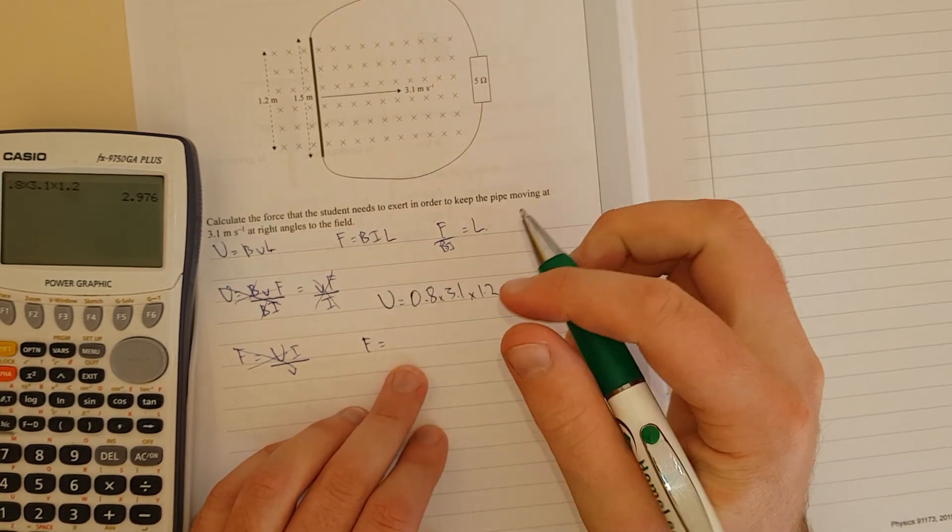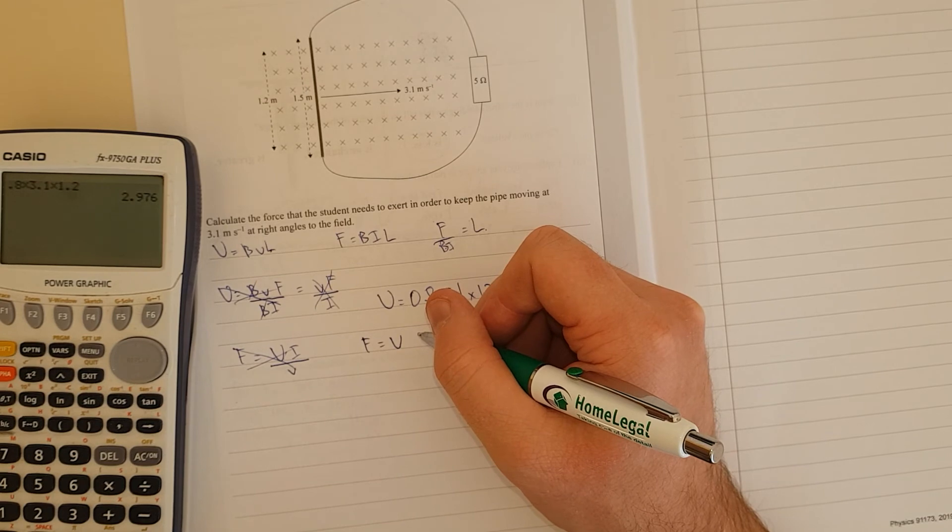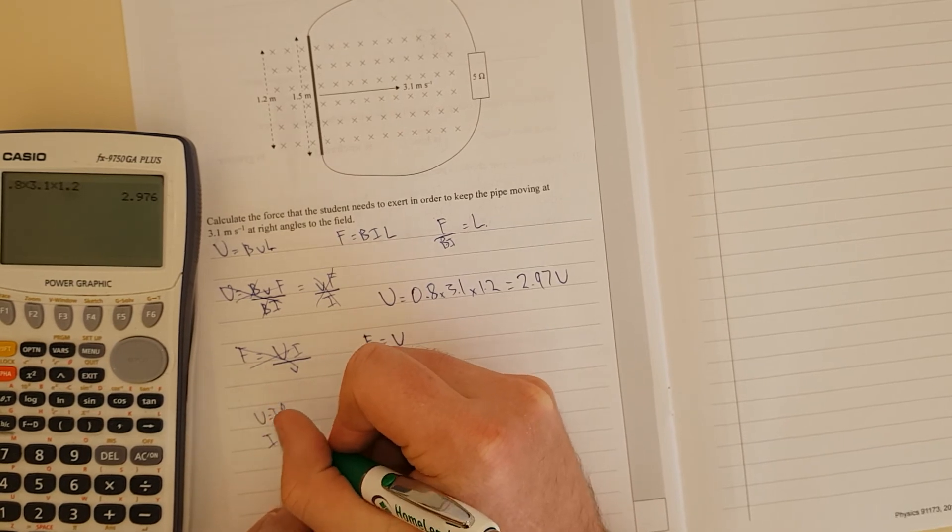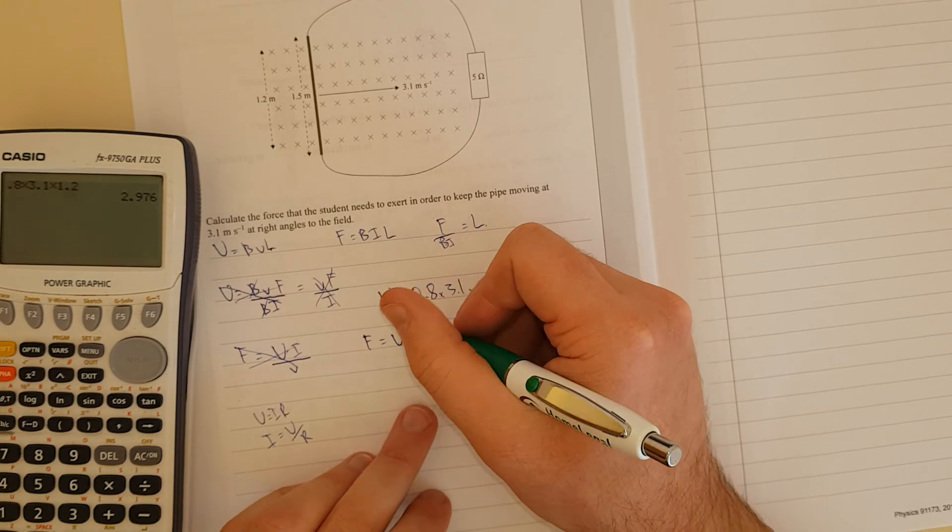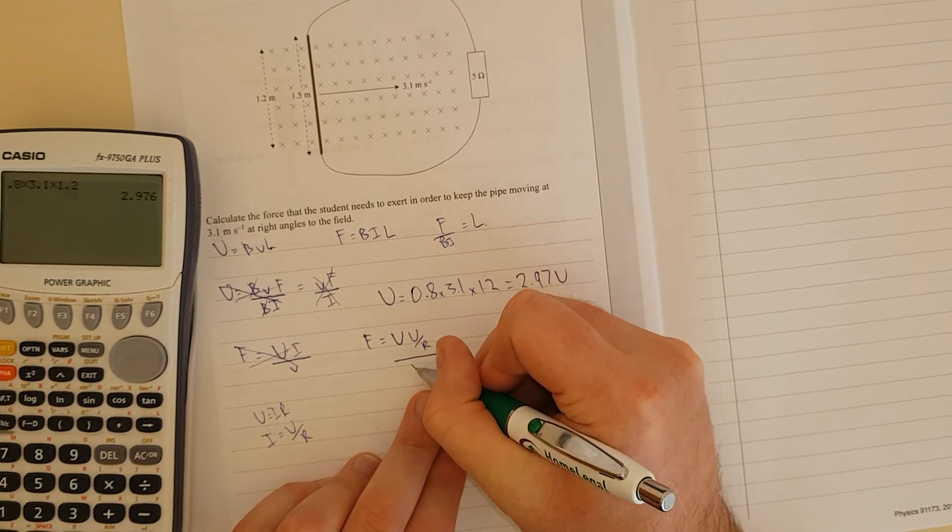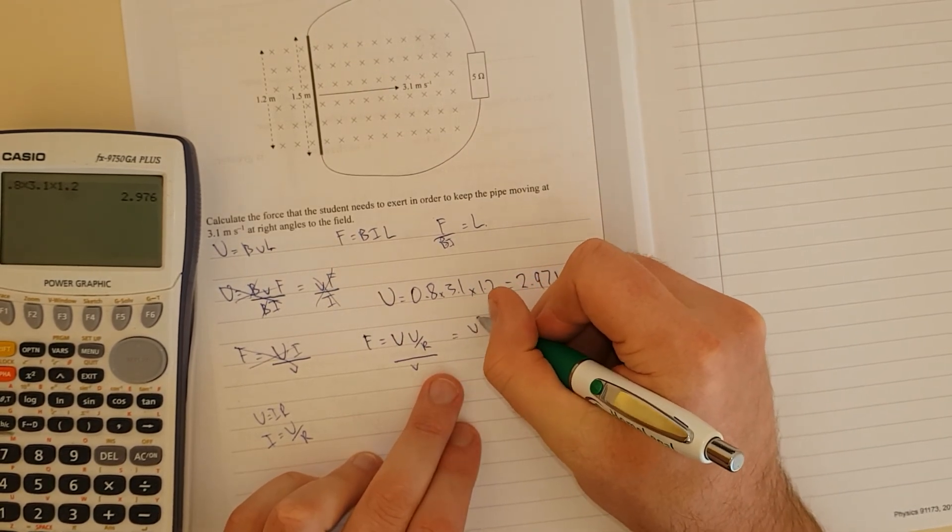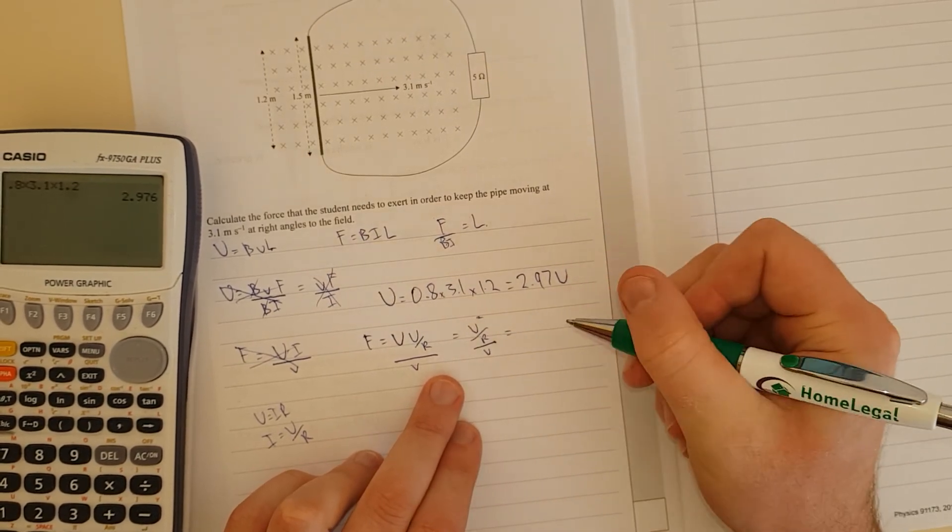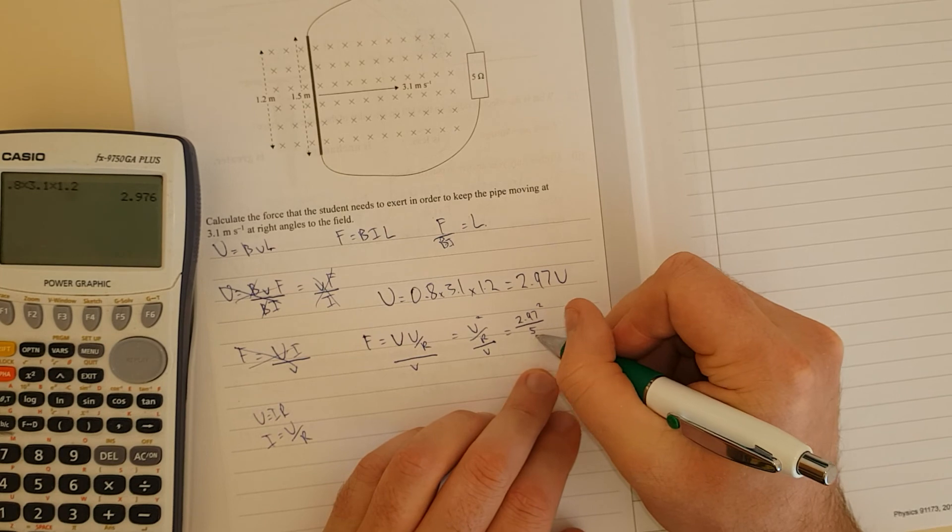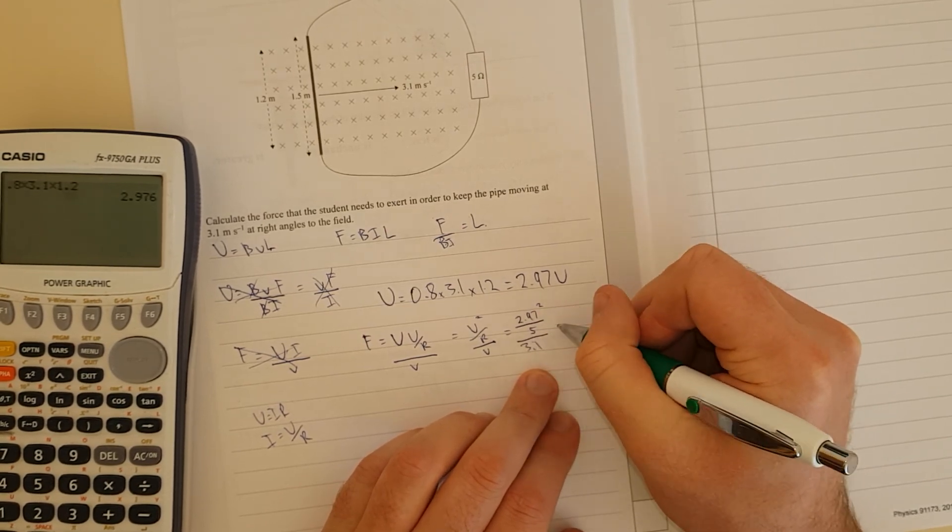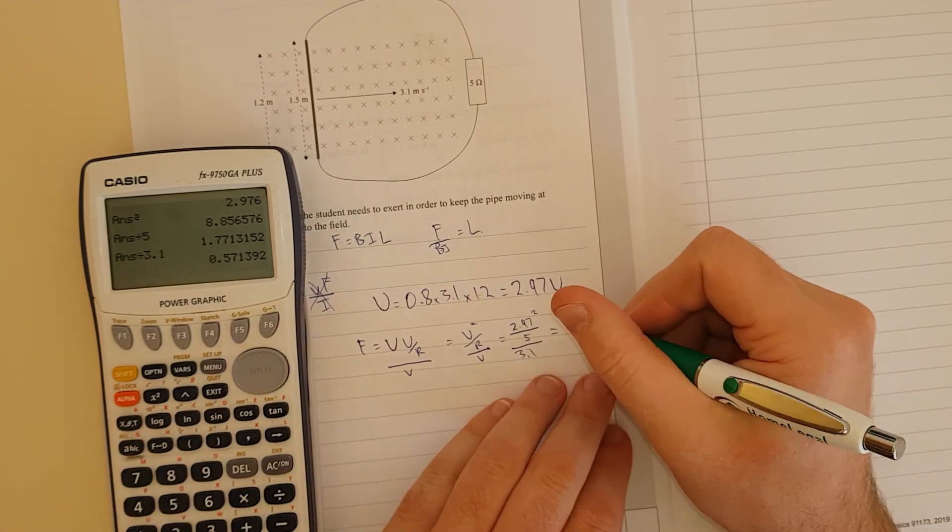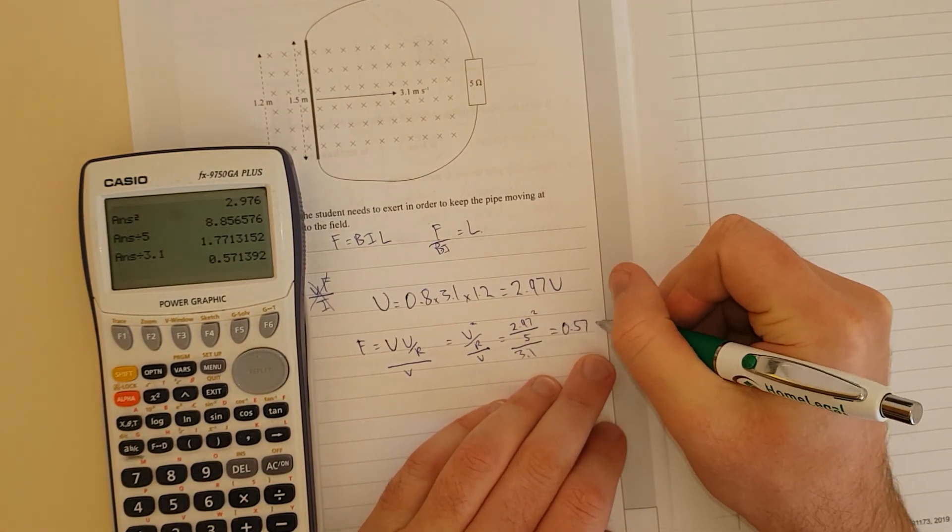I'm actually going to use this formula. Force equals voltage. So voltage, now current is equal to, so we've got V equals IR. Current is equal to voltage over resistance. So I would substitute that in. So it's voltage over resistance divided by the velocity. And we can see this is going to be equal to V squared over R divided by the velocity. And now I'm just going to chuck the numbers in. So I'm going to have 2.97 squared divided by 5 and then divided by 3.1. And this will equal 0.571 newtons of forces. 0.57 newtons.